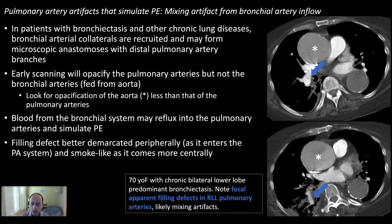Another cause of mixing artifacts within the pulmonary arteries is bronchial artery inflow. In patients with bronchiectasis or chronic lung inflammation, bronchial arteries hypertrophy. Remember, bronchial arteries are fed from the aorta, so their opacification is much later than the pulmonary artery system. In areas of abnormal lung, small collateral connections between the bronchial and pulmonary artery systems allow a shunt — flow from bronchial arteries into pulmonary arteries — causing small filling defects, as seen in this patient with bronchiectasis.